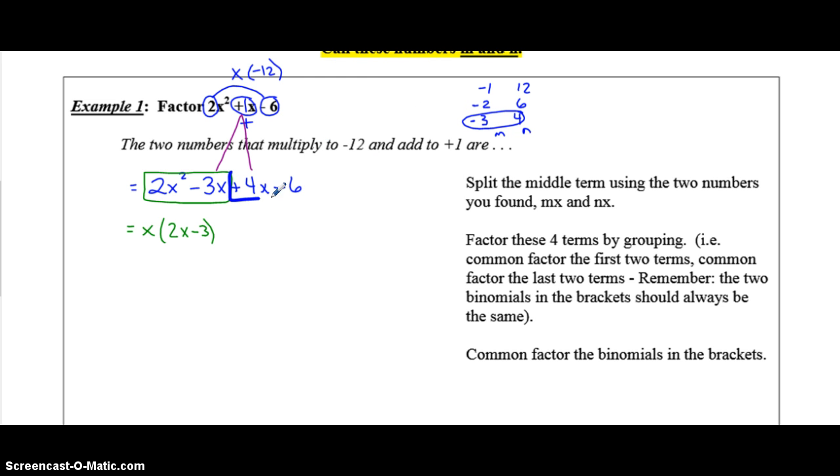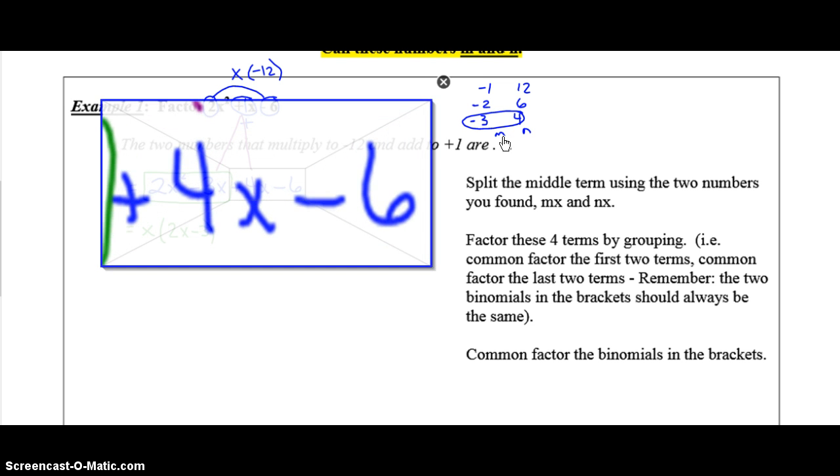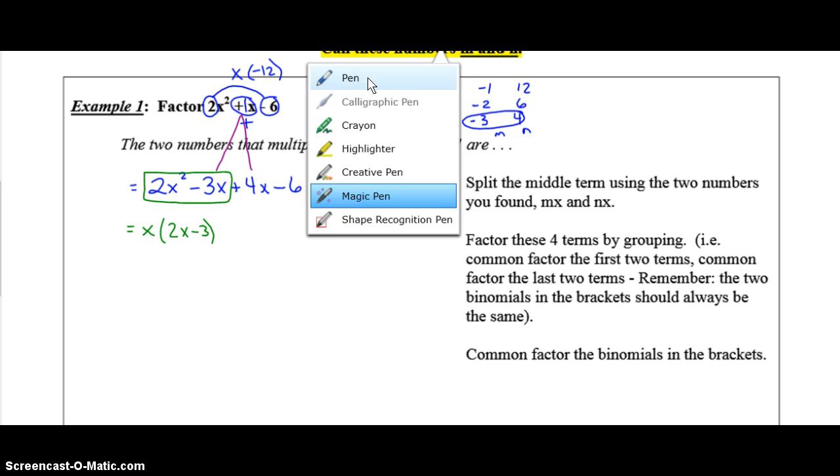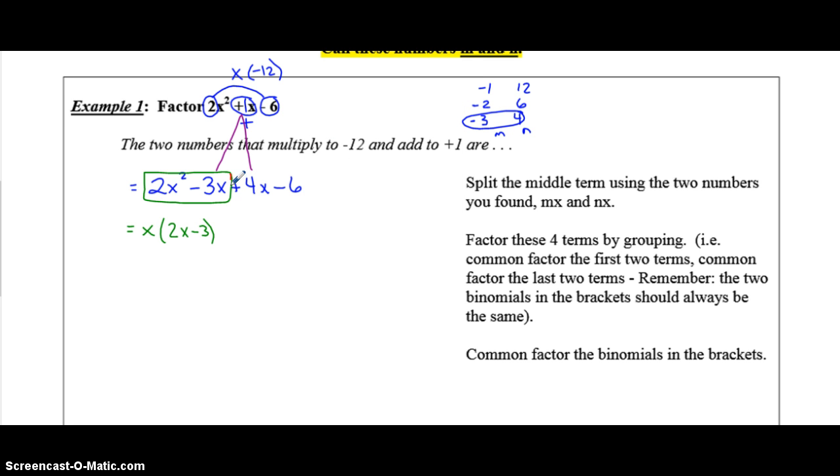Now, you look at the second two numbers. And, what can you common factor out of 4x plus 6? Well, my friends, that is a 2. So, put a box around the second two terms. And, you're going to common factor out a 2 from the second two terms. And, that leaves you with 2x minus 3. And, if you remember, you want those two brackets to be exactly the same. So, that's your common factor. So, the first set of brackets is the common one, which is 2x minus 3. The second set of brackets is the scraps, stuff left over, which is x plus 2.